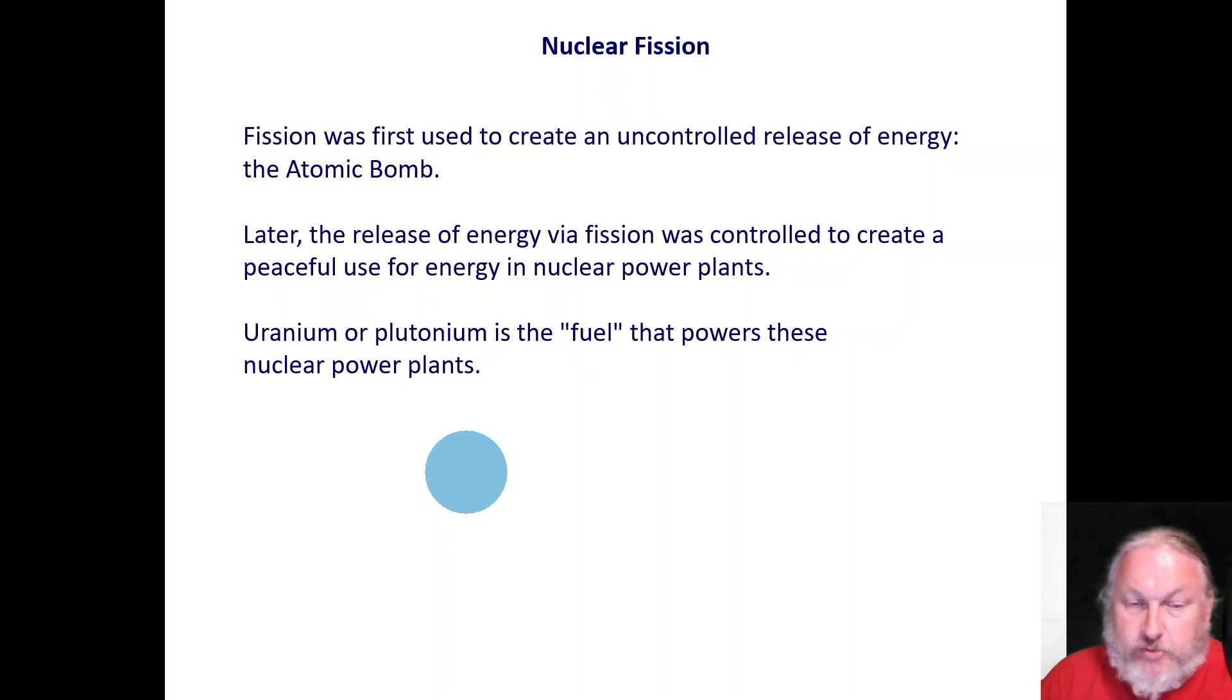So what do we use nuclear fission for? Nuclear fission was used to create the uncontrolled release of energy. We know it as the atomic bomb. It was used in Nagasaki and Hiroshima to end World War II. And then now we're using the release of this energy with fission, and we use it in a peaceful use in nuclear power plants to produce electricity. Uranium or plutonium is the fuel that will power these nuclear power plants. We also use it in ships and submarines to power our ships. And other than waste products, it's a very efficient form of making electricity.